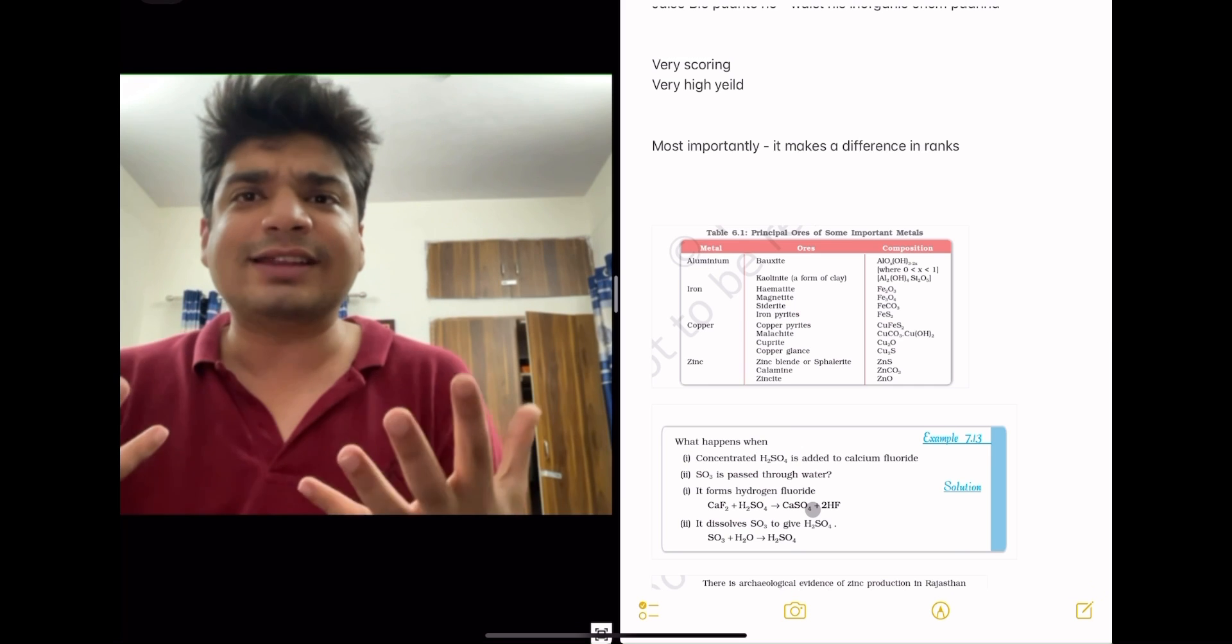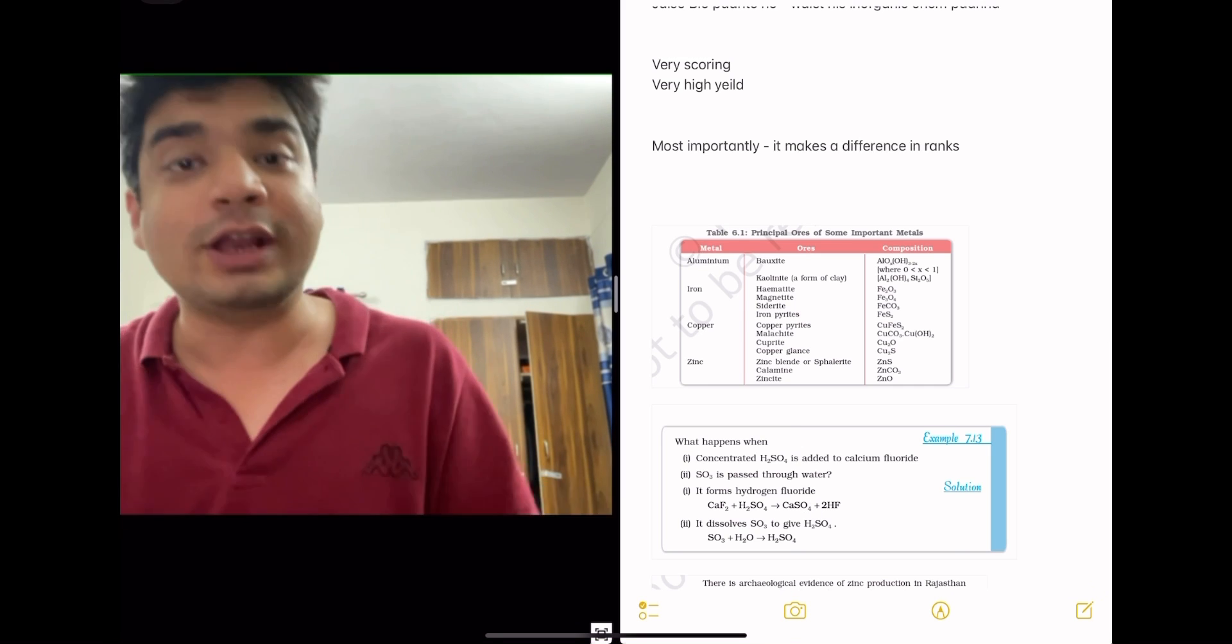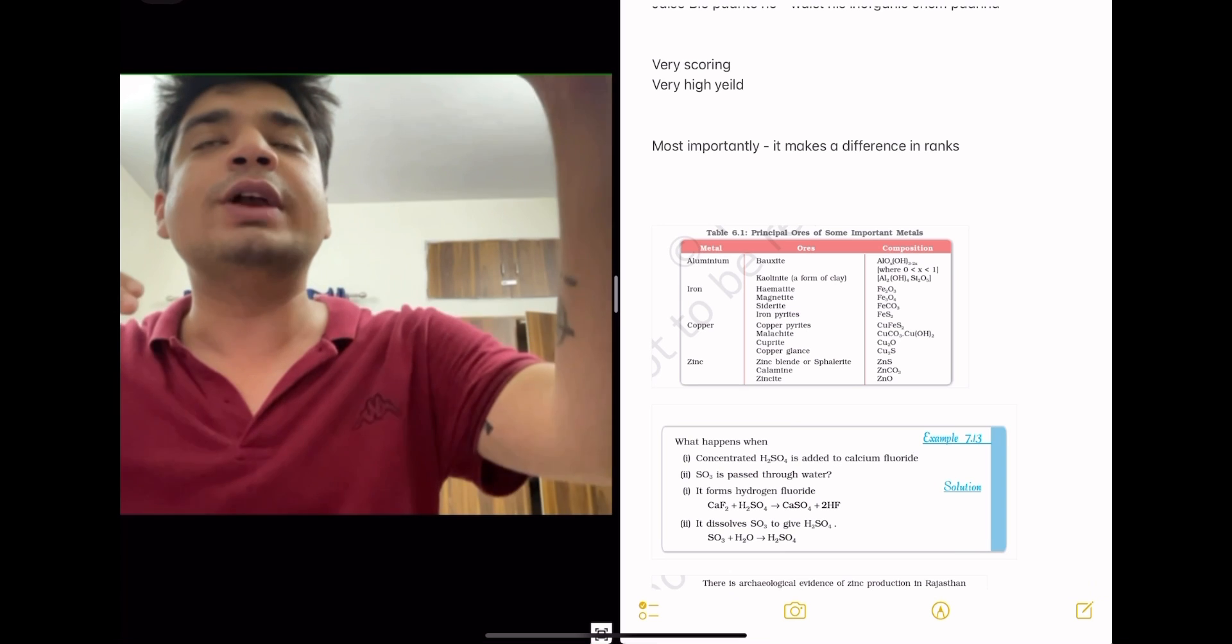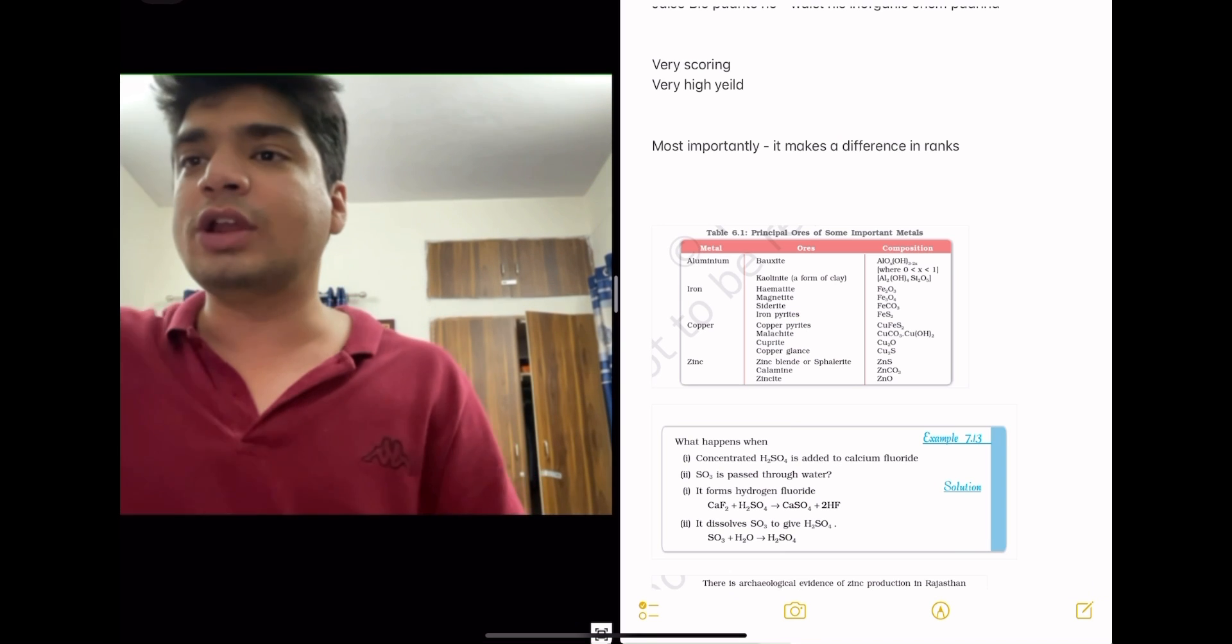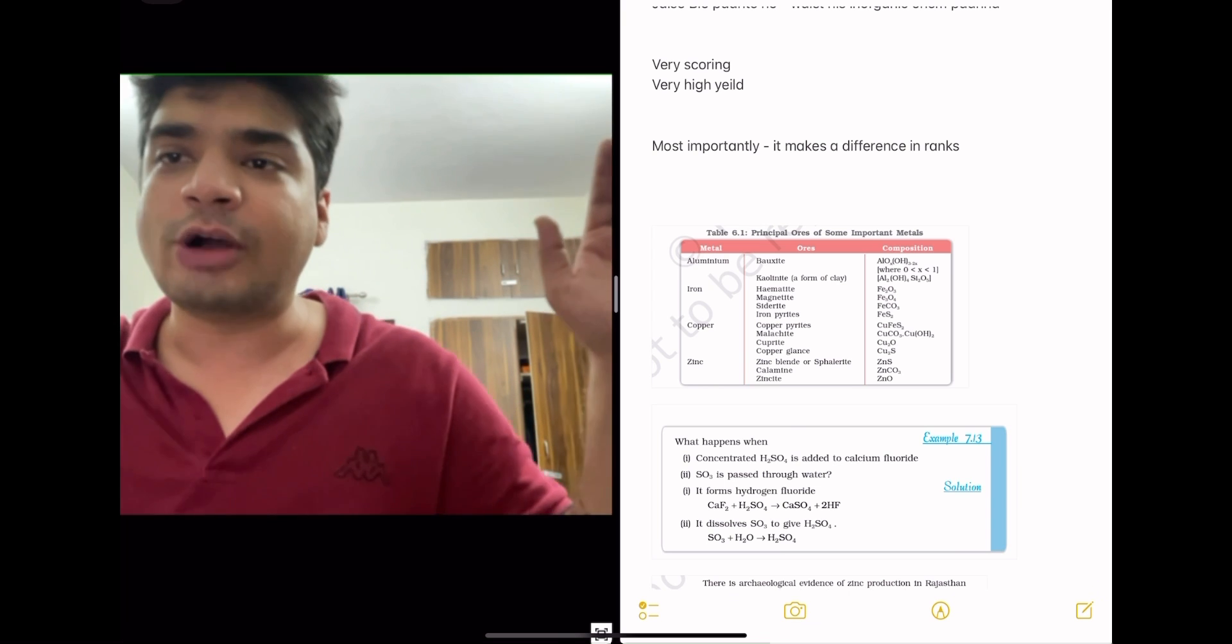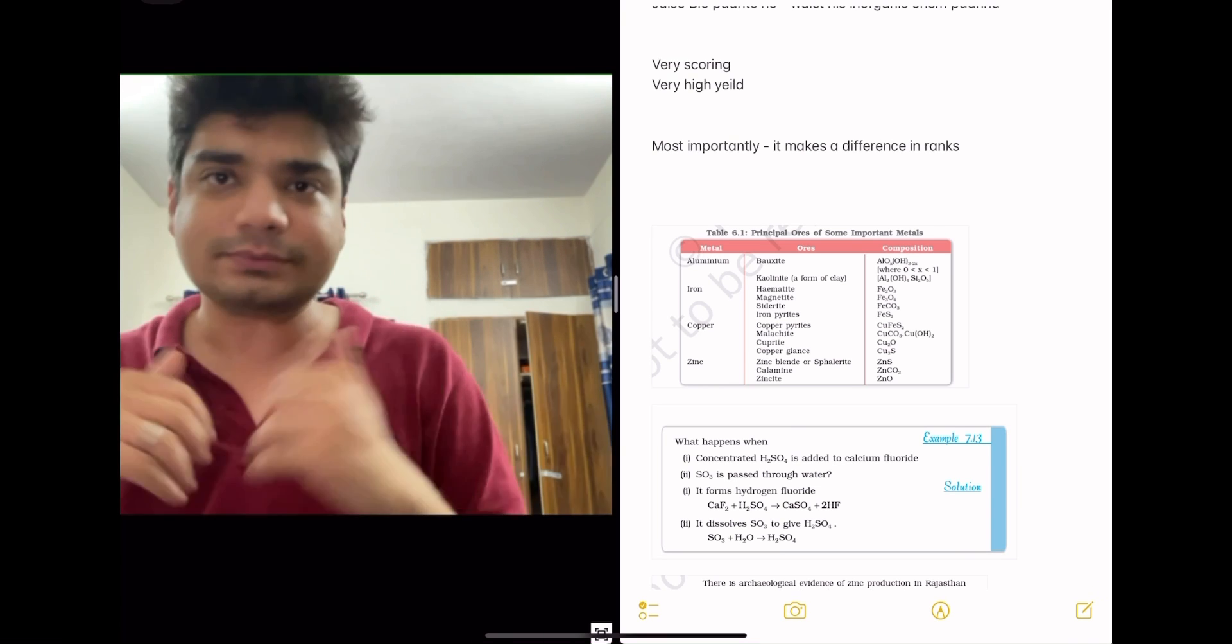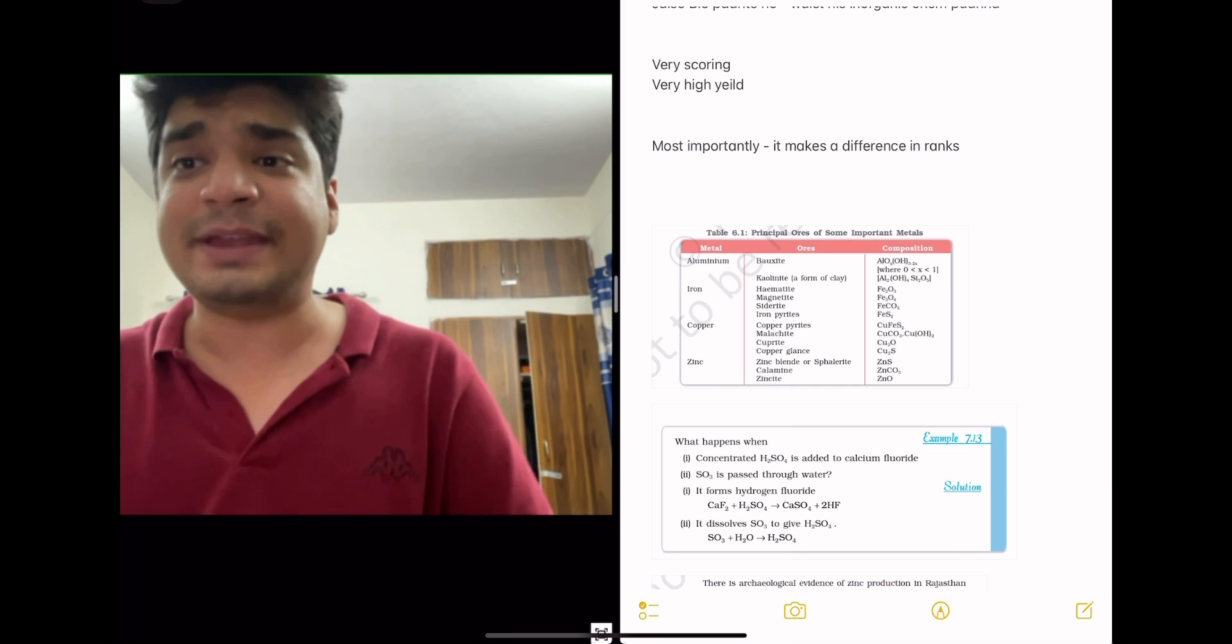For example, the simple facts that can be asked is mix and match. Which of the following is an ore of Aluminium? Match the following with the ore. Which one is iron? Which one is magnetite, hematite, sidrite, and stuff like that. Which one is aluminum? Bauxite. Which one is copper? Malachite. Which one is zinc? Zincite. That's pure fact-based question.